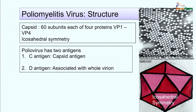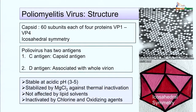Poliovirus has 2 antigens: C antigen, also known as capsid antigen or coreless antigen or heated antigen, and D antigen, which is associated with the whole virion and also known as native antigen. Poliovirus is stable at acidic pH between 3 and 5. It is also stabilized against thermal inactivation by magnesium chloride, and is not affected by lipid solvents like ether, chloroform, or bile salts. However, it can be inactivated by chlorine and oxidizing agents.